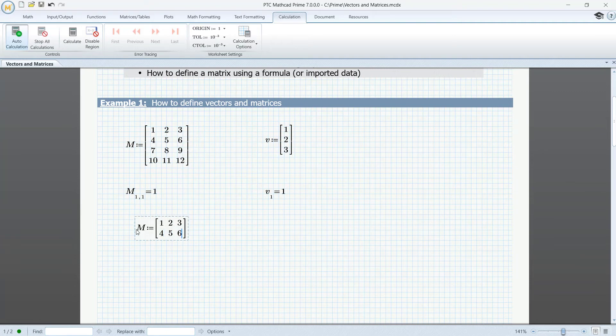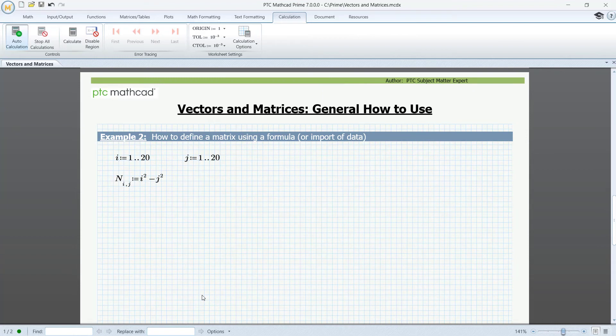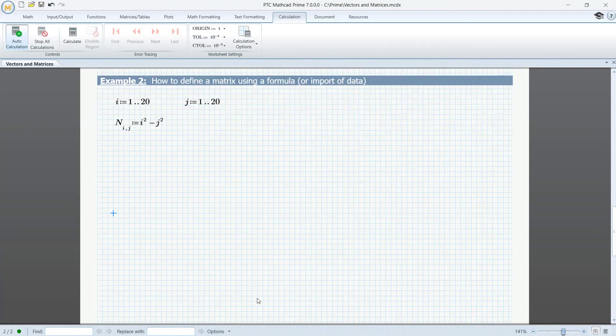4, 5, 6, tab key, and so on. Let's move to the next example. Here, the plan is to create a matrix, a 20 by 20 matrix, using a formula. Let's see what's in the matrix M.